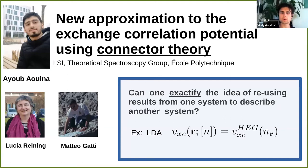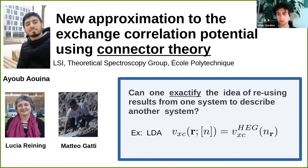I will introduce Ayub Awina, who is a third-year, last-year PhD student in our group at Kohlperiotechnik. He is working together with Lucia and Matteo. Our group is a theoretical spectroscopy group, so our main activity is around theoretical spectroscopy, but not only.